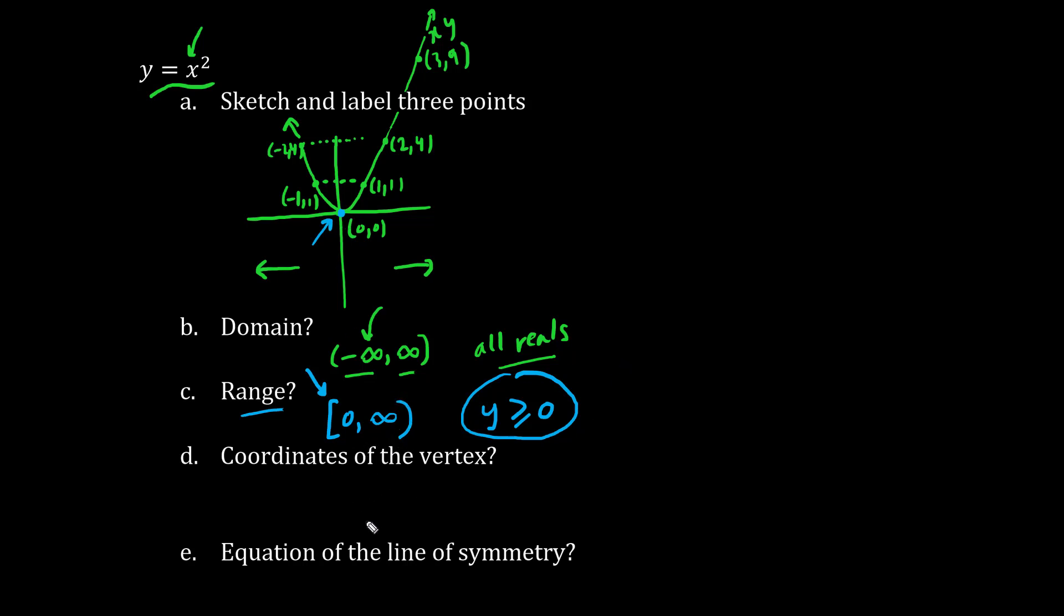As for the coordinates of the vertex, we have 0, 0. These are the x, y coordinates. Finally, the equation of line of symmetry refers to this imaginary line that runs vertically. It is x equals 0. Do not mix up x and y.